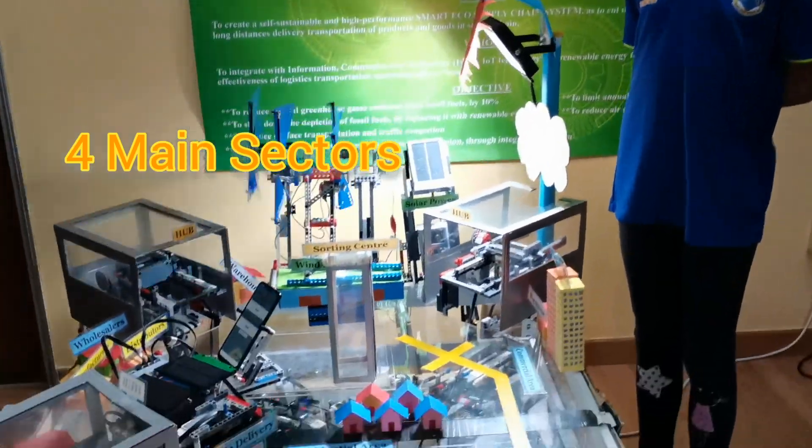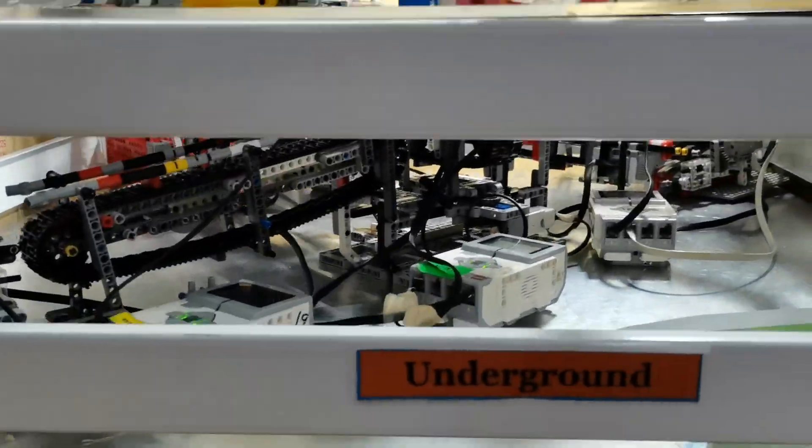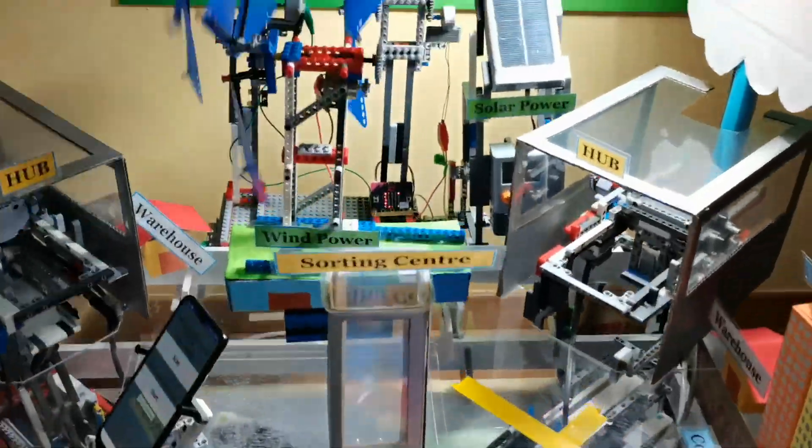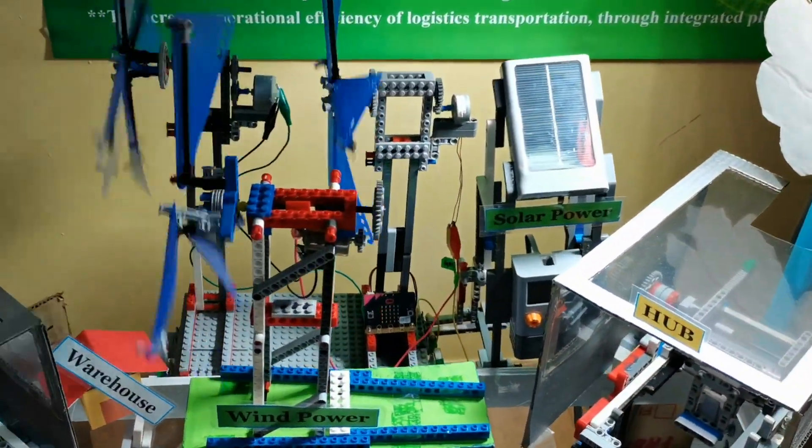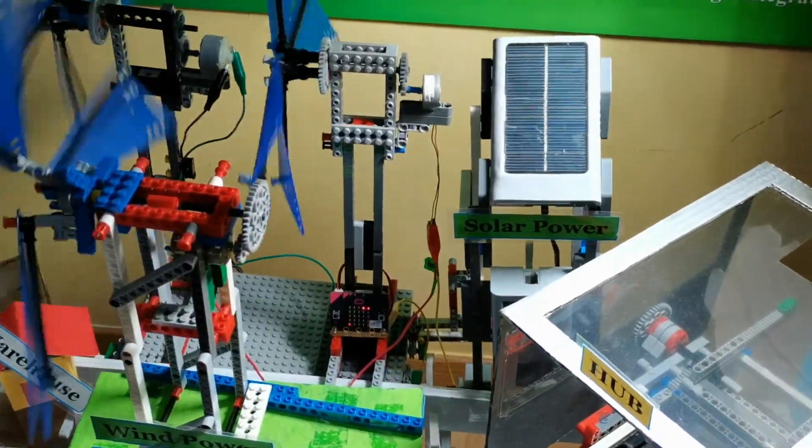Smart Eco Supply Chain System, or SECS, is composed of four main sectors. First sector consists of self-generated renewable energy, which is wind energy and solar energy to power the operation of the system.